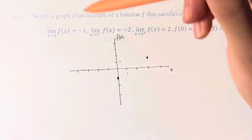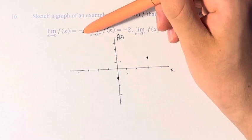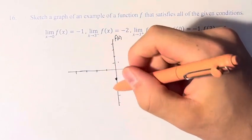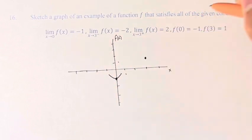Next, we know that the limit as x approaches 0 of the function is equal to negative 1. So as we come towards 0 from both sides, the function also equals negative 1.